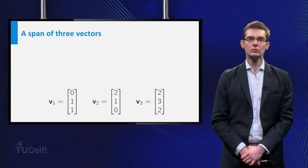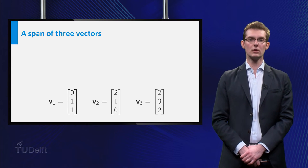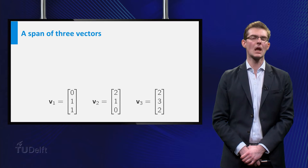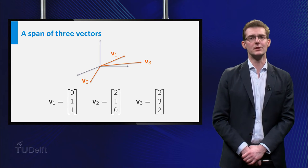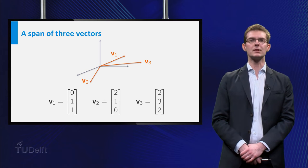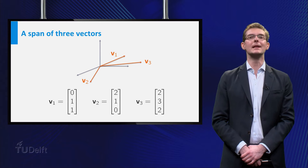Maybe it is not immediately clear what the span of these vectors is, if you look at the coordinates, but the following figure might give you an idea. Chances are that you have guessed by now that the span of V1, V2, and V3 is in fact a plane, and this is correct. The span of these three vectors is a plane through the origin.